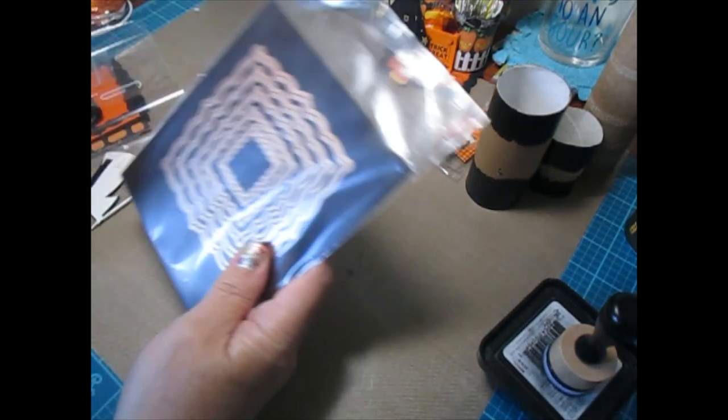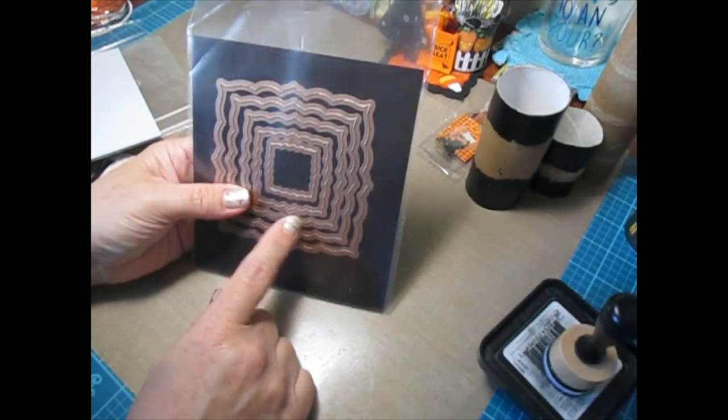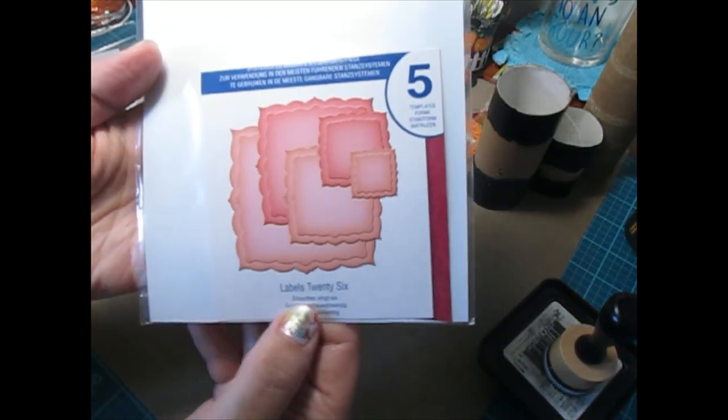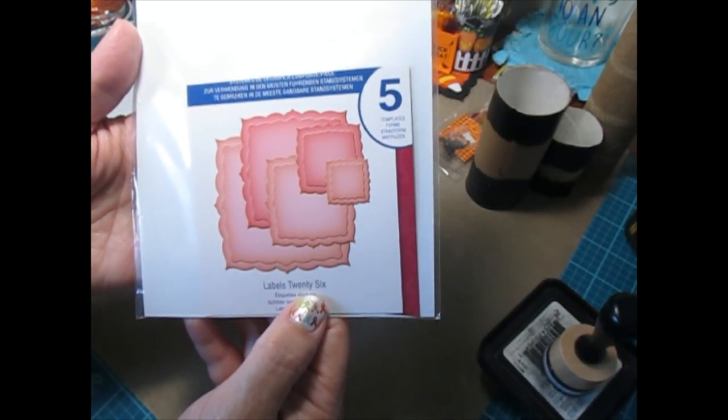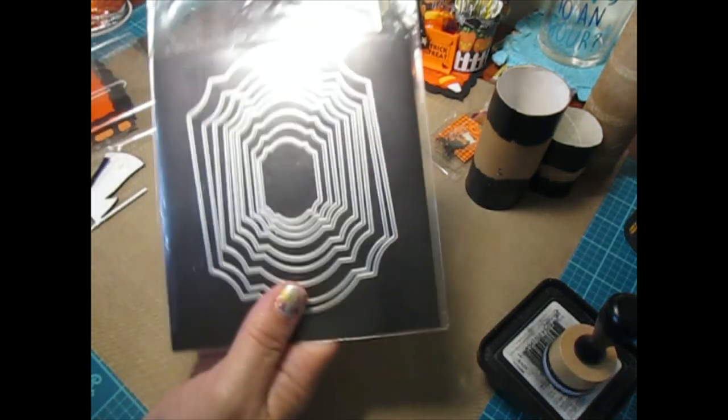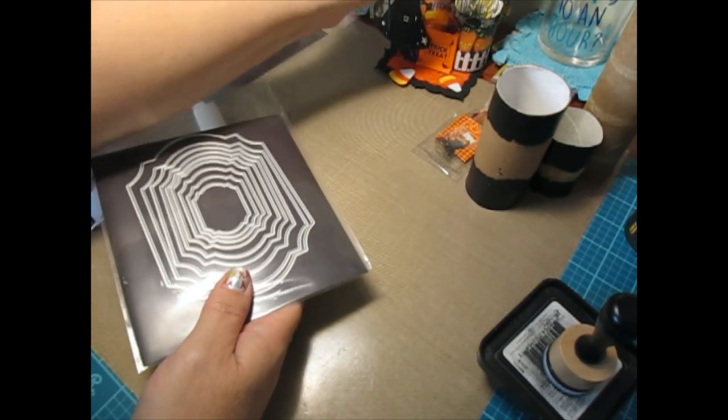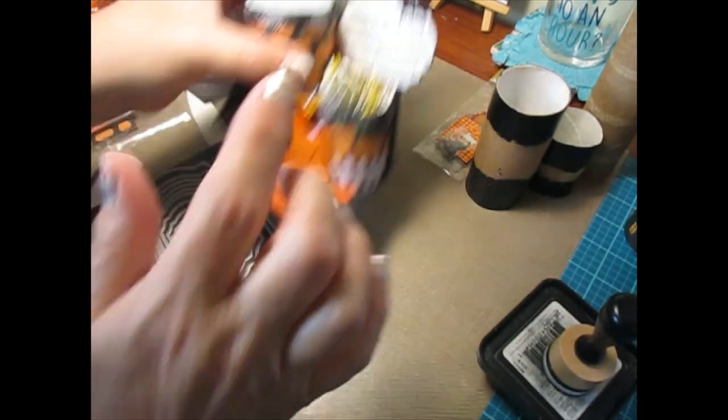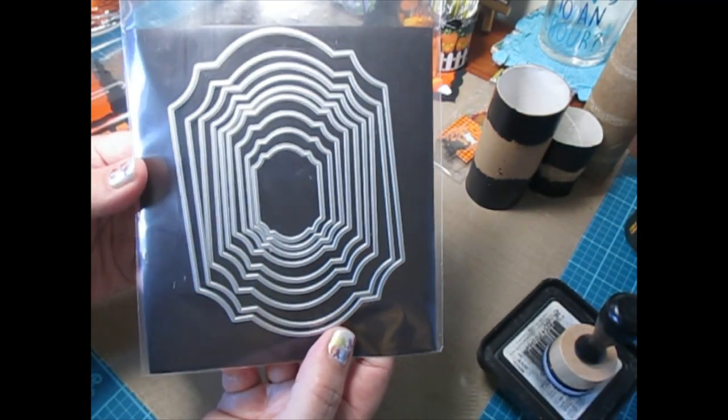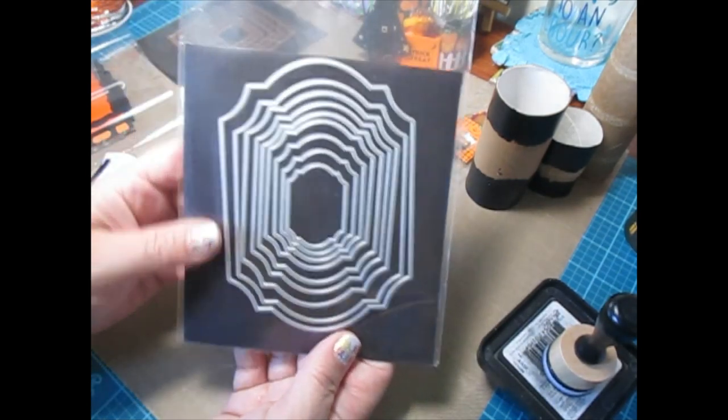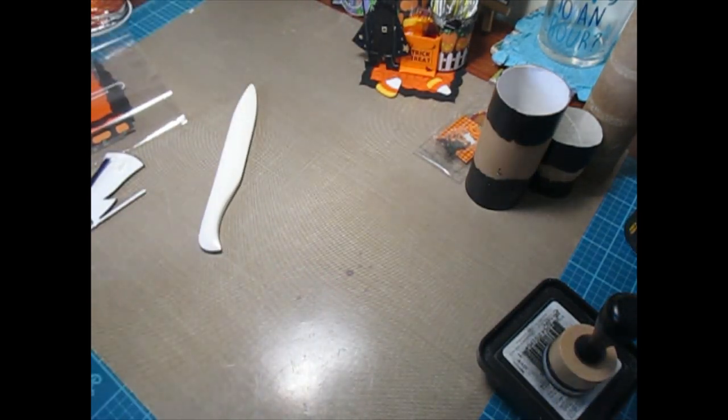For the bottom, your base piece, I used the Labels 26 from Sizzix Dies. I'll give you the sizes when we do the tutorial. For the sentiment here, I used this die set I picked up from Hobby Lobby.